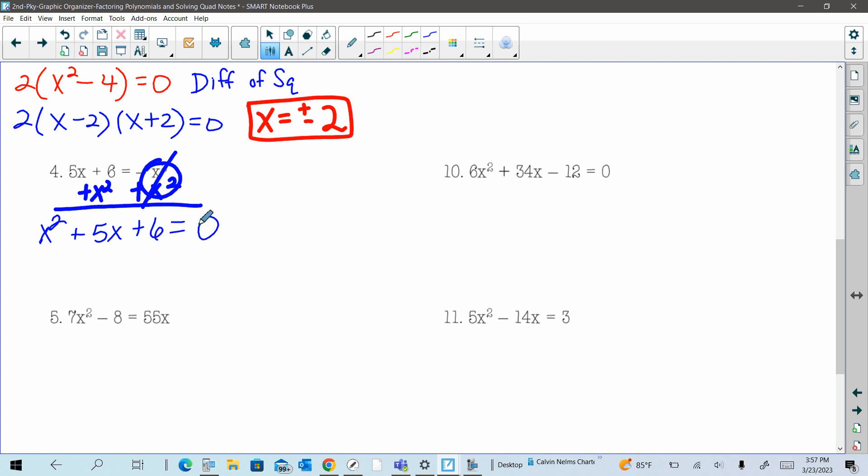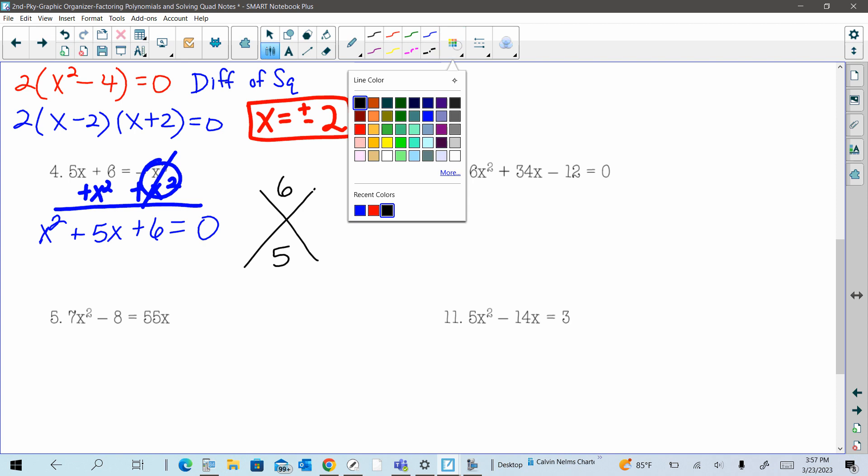So now I'm just factoring like normal. This x squared does not have a coefficient. So I'm just going straight to my x puzzle. And in my x puzzle, we'll have a six on top, the last term, the middle term is at bottom. Factors of six with the sum of five. Well, that's going to be my three and two. Three times two gives me six. Three plus two gives me five.